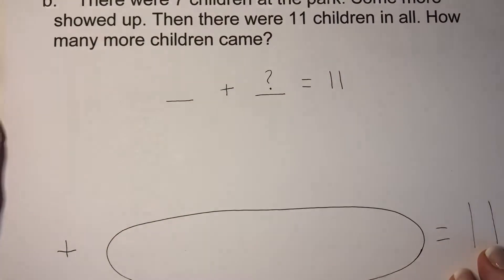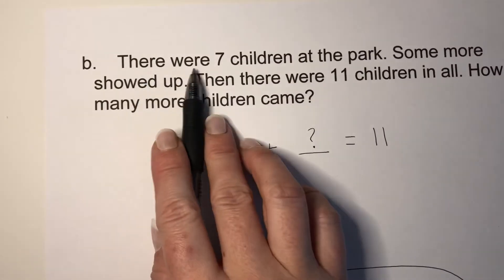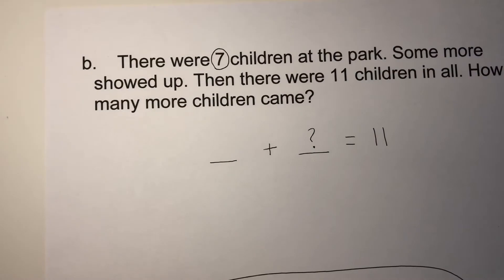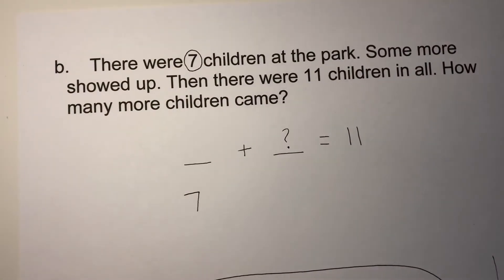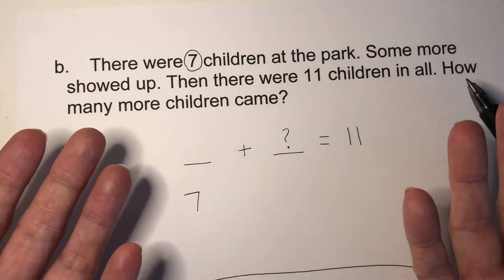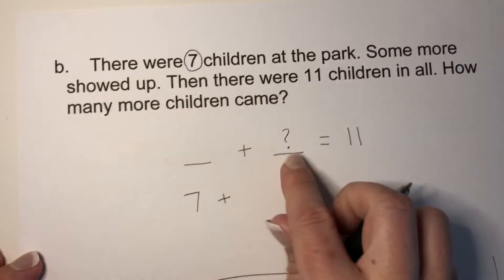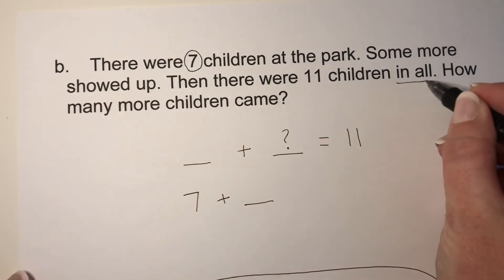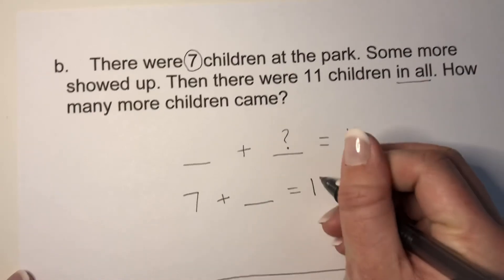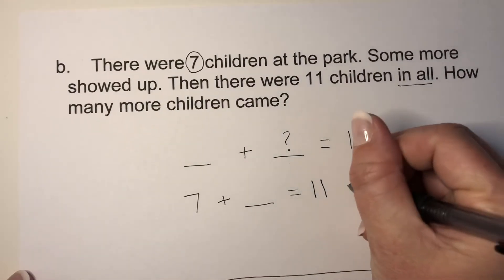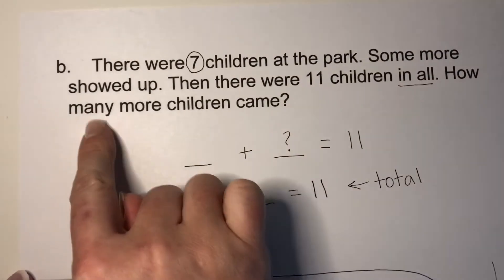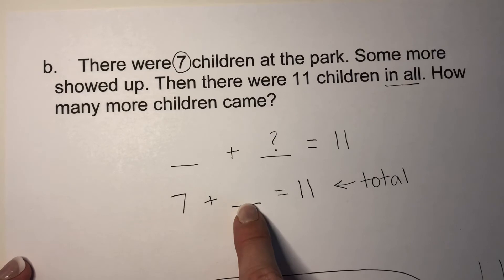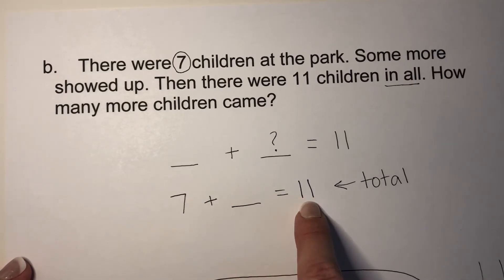Now let's write that in an equation. There were seven children at the park — we are going to circle the number seven because that tells us what number we start with. Some more showed up. Do we know how many more showed up? No. That's why we put a question mark, but I'm just going to put a line. Seven plus something. Then there were eleven children in all — that's our total. How many more children came? The number we're looking for in our equation is how many more joined the seven to make eleven children in all.